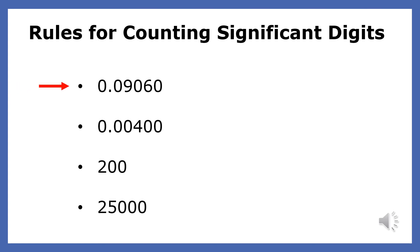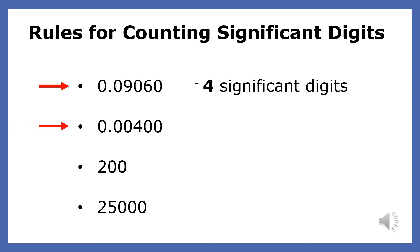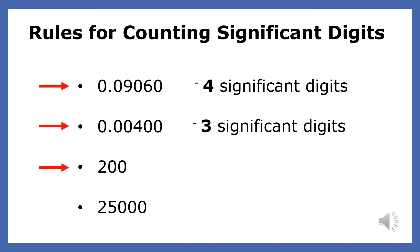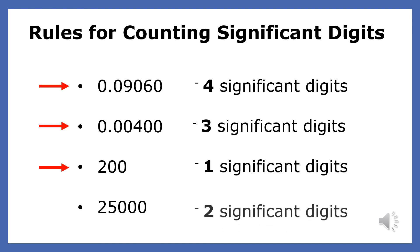Let's finish with four more examples. We have 0.09060 — this is a decimal, so the trailing zero counts, and the zeros in between non-zero numbers do as well. That's four significant digits. Another decimal: trailing zeros count, but leading zeros do not — we don't count the first three zeros. So 4, 0, 0 gives three significant digits. The next number is not a decimal, so the trailing zeros don't count — that's only one significant digit. And the last one is also not a decimal, so trailing zeros don't count — two significant digits.